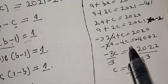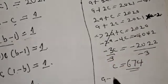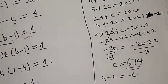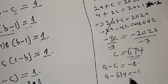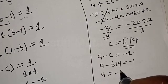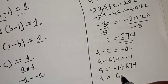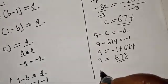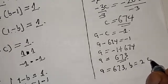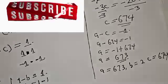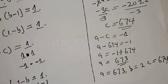We now have C equals 674 and B equals 2. Substituting into A minus C equals minus 1: A minus 674 equals minus 1, so A equals minus 1 plus 674, giving A equals 673. Therefore from Case 2: A equals 673, B equals 2, C equals 674. Those are the integer solutions from both the first and second cases. If you enjoyed the class, please don't forget to like, share, comment and subscribe. Thank you.